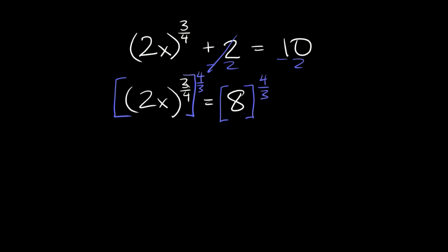On this side, those exponents cancel out, so we're just left with what's in parentheses: 2x. So we're going to say 2x is equal to 8 raised to the 4/3.